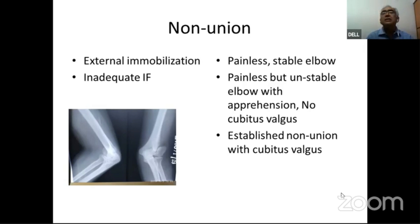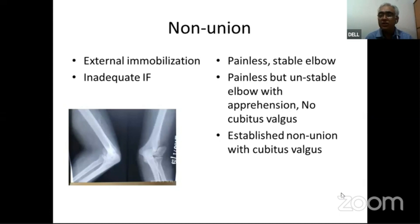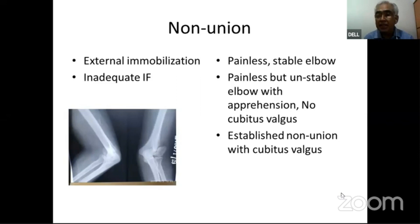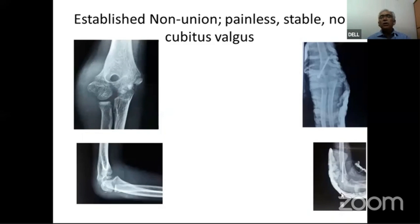If the child does not present before 12 weeks, the fracture is usually labeled as non-union. Once labeled as non-union, it can present in three scenarios: Scenario 1 — a painless and stable elbow; Scenario 2 — painless elbow but with instability and apprehension when lifting weight, though cubitus valgus has not yet developed; Scenario 3 — established non-union with cubitus valgus already developed.